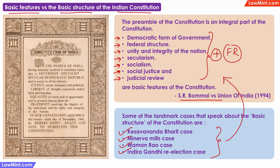Now all these basic features are mentioned or can be derived from the preamble itself. Democratic is mentioned here, federal structure can be derived from democratic, unity and integrity are mentioned here, secularism is here, socialism is here, social justice and judicial review can be derived from justice, and fundamental rights can be derived from liberty.